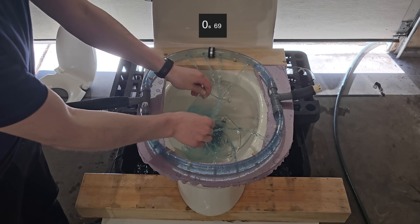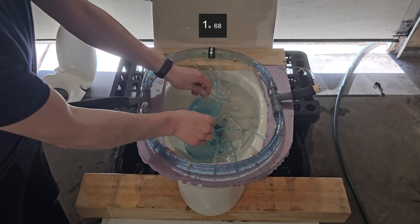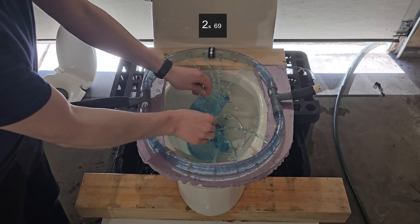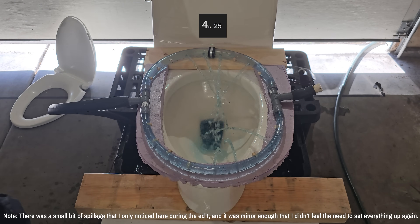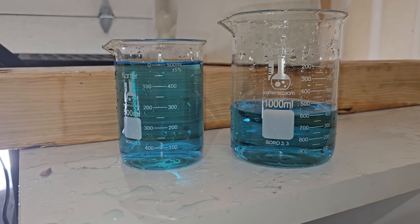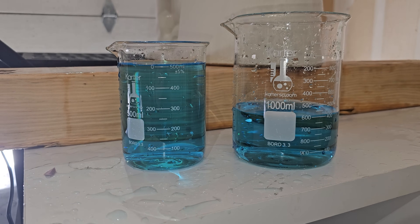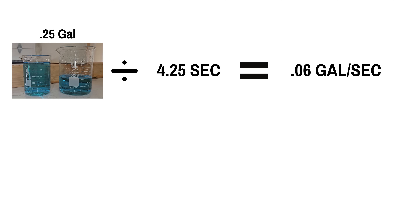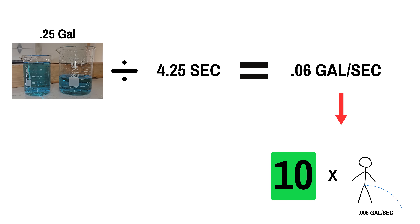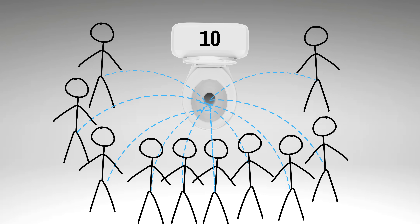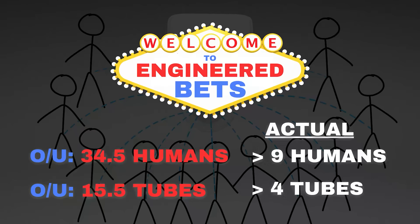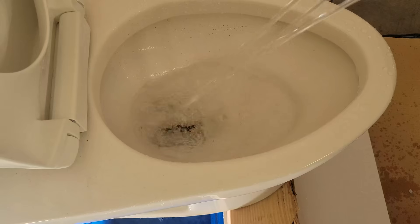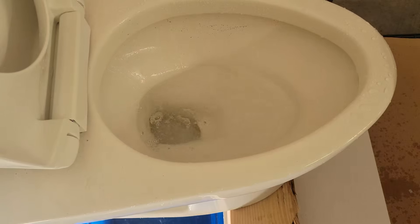Although this wasn't perfectly accurate, I put the beakers under the full stream and tried my best not to spill. In 4.25 seconds it collected about a quarter of a gallon, which is the equivalent of 10 human streams. That means the under hit, and it was surprisingly close to the old result, which means I was pretty close to getting a full flush on that one.